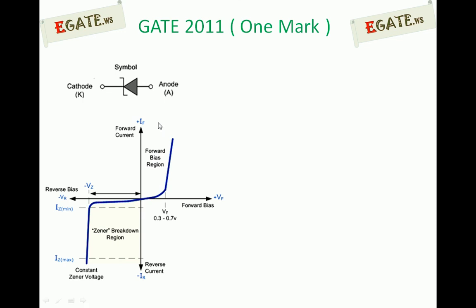The Zener diode characteristics are shown with voltage on the x-axis and current on the y-axis. Moving right is positive voltage (forward bias) and moving left is negative voltage (reverse bias). Under forward bias, the Zener diode acts as an ordinary diode with a cut-in voltage of 0.7V for silicon, after which current increases rapidly.